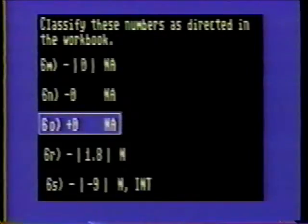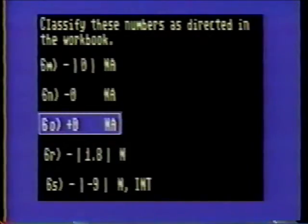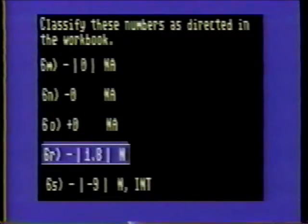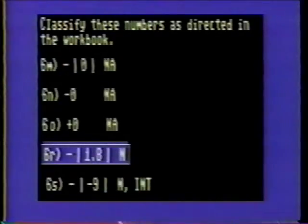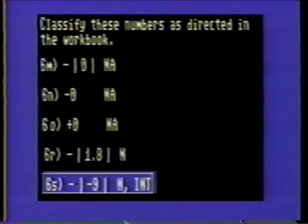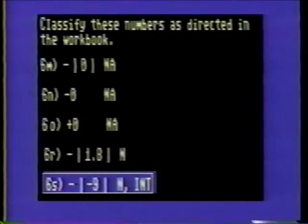Problem 6O: The plus sign in front of 0 incorrectly identifies it as a positive number, which it is not. 0 is neither positive nor negative. The answer is none of the above. Problem 6R: Minus the absolute value of 1.8 is negative 1.8. The solution is a negative number. Problem 6S: Minus the absolute value of negative 9 is negative 9, which is a negative number and an integer.